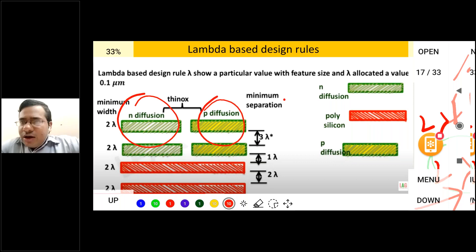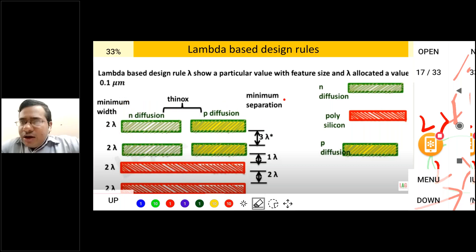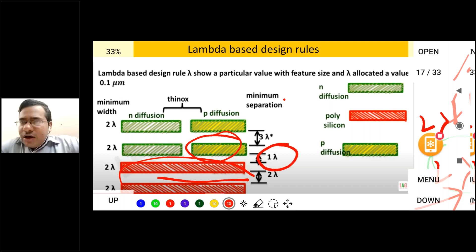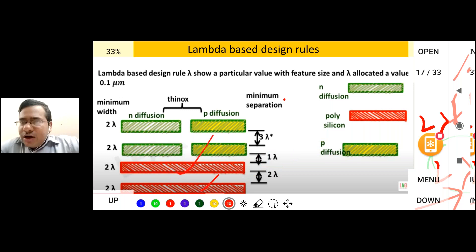N-diffusion is two lambda and P-diffusion is also two lambda in width. If two P-diffusion layers are near each other, the spacing is three lambda. If the diffusion layer and the poly layer are near each other, the spacing is one lambda. If two poly layers are near each other, the spacing between them is two lambda.